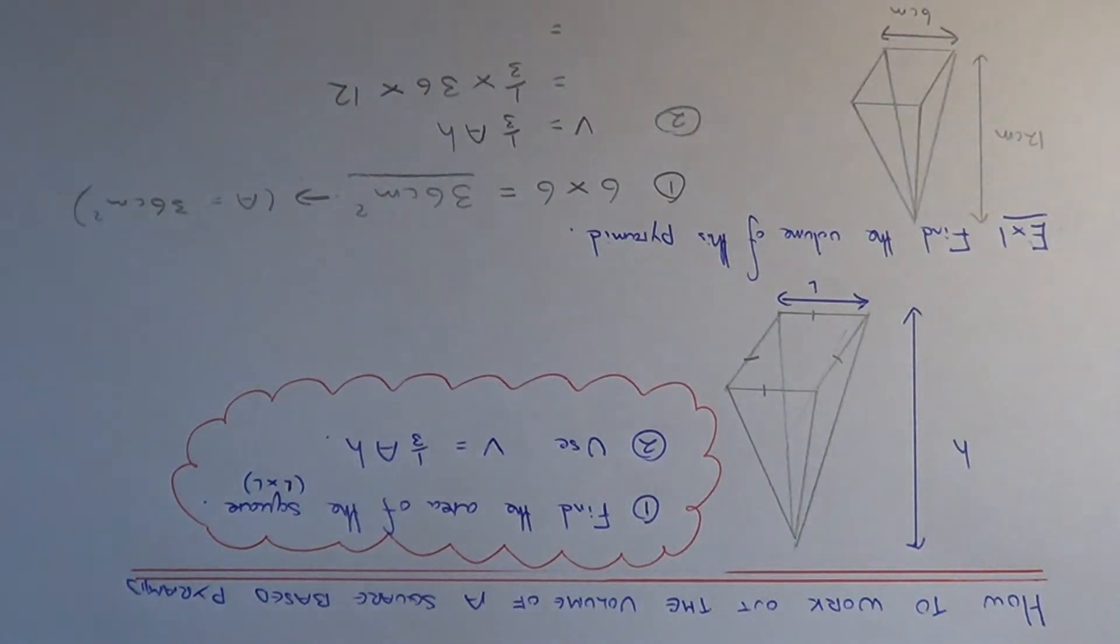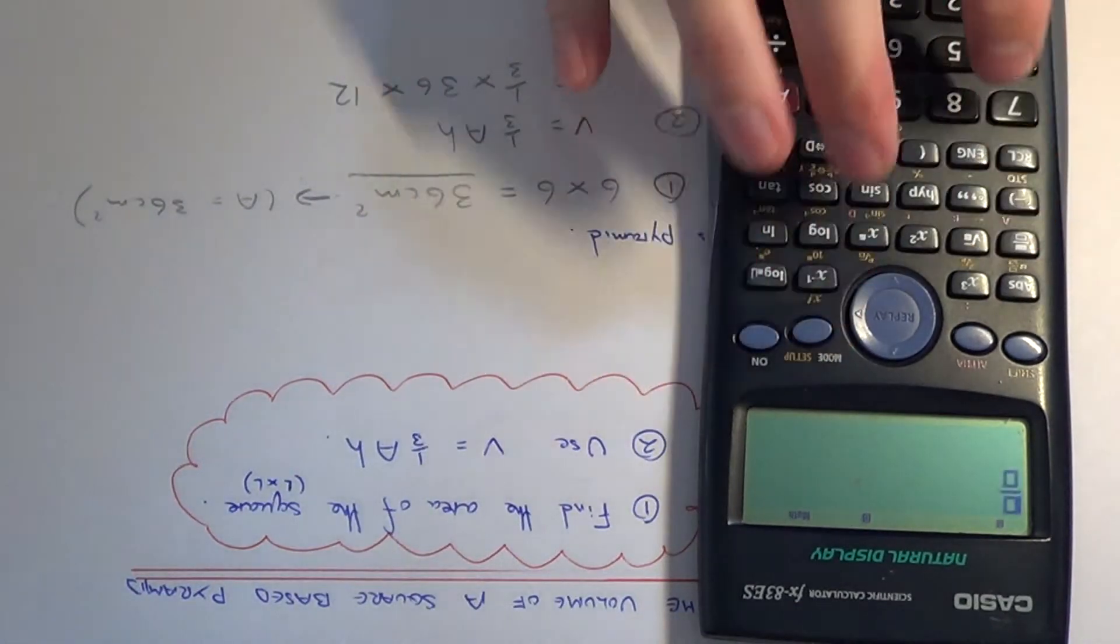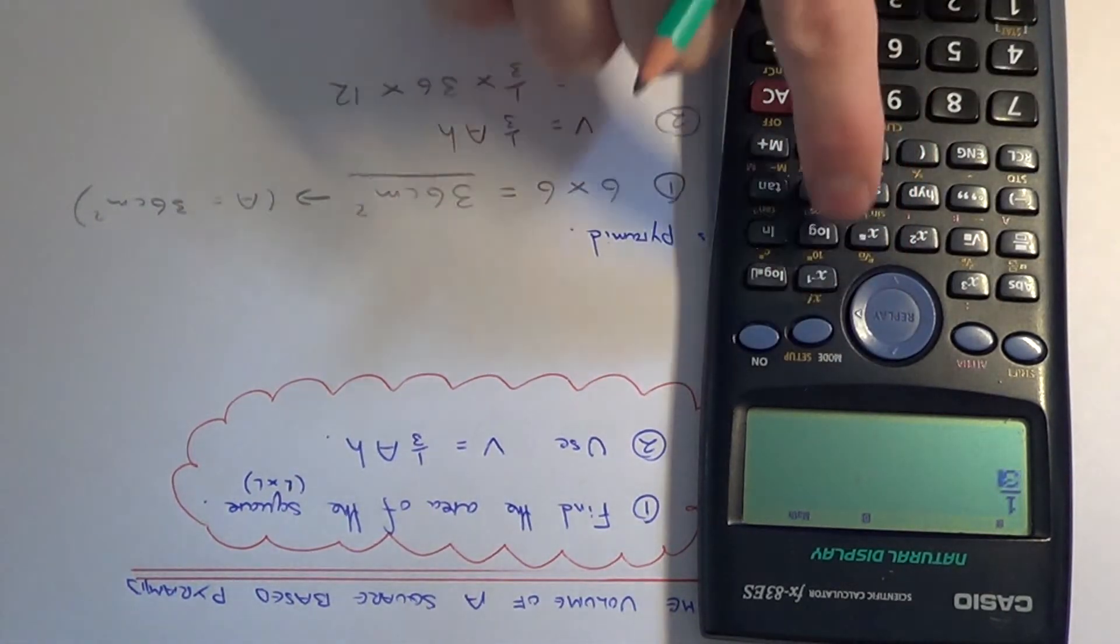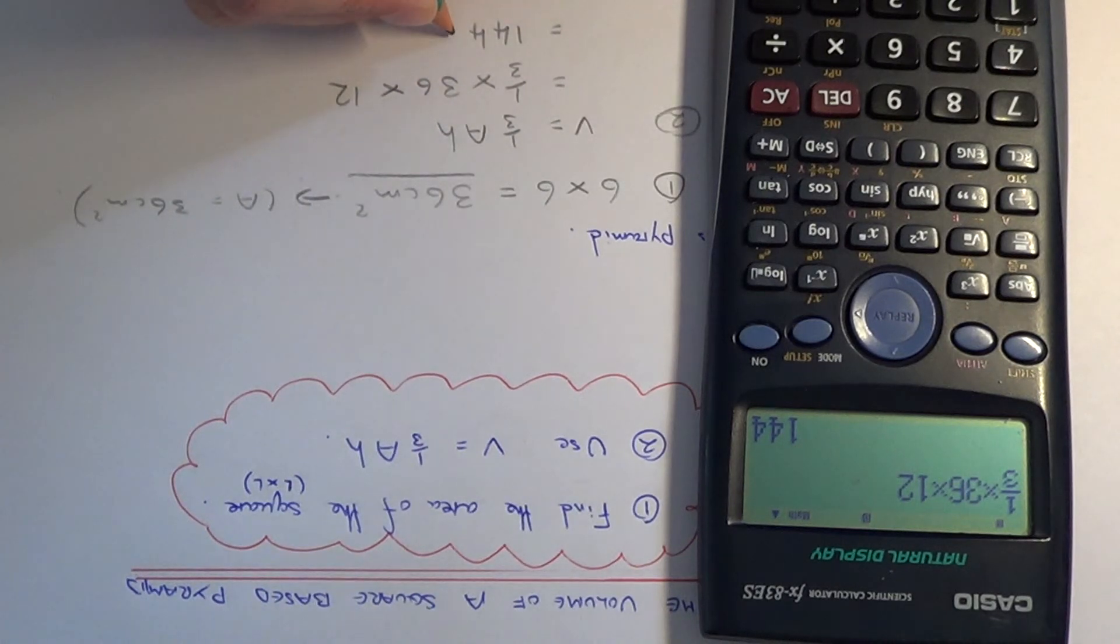You just need to type this in on your scientific calculator. One third times the base area times the height gives us an answer of 144 cm cubed.